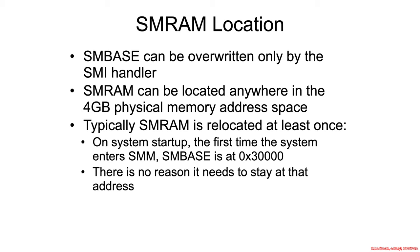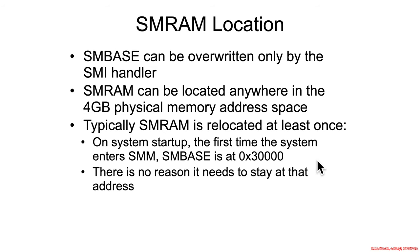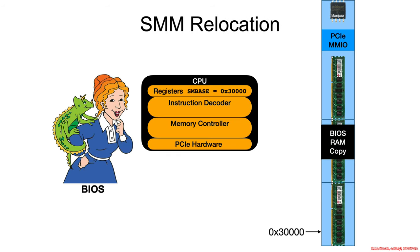Let's talk about the different locations where SMRAM could reside. SMBase can be overwritten by the SMI handler via rewriting the save state, and it is a 32-bit value only, so it can only exist somewhere inside the 4GB physical address range. On modern systems, SMRAM is relocated at least once — it'll start out at SMBase of 0x30,000, but then it'll move around, as we'll see a little bit later.